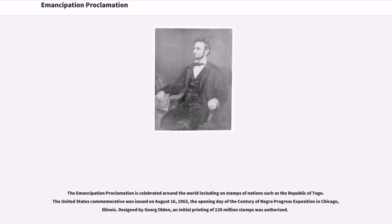The Emancipation Proclamation is celebrated around the world, including on stamps of nations such as the Republic of Togo. The United States Commemorative stamp was issued on August 16, 1963, the opening day of the Century of Negro Progress Exposition in Chicago, Illinois. Designed by Gayor Golden, an initial printing of 120 million stamps was authorized.